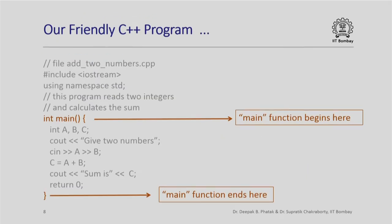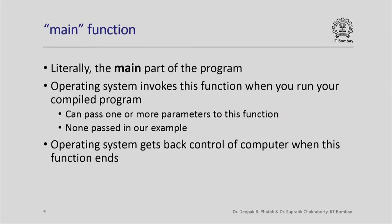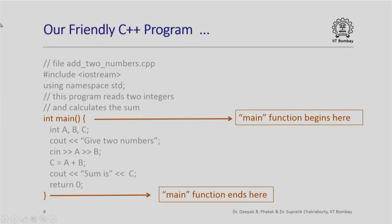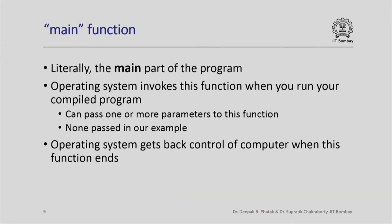Here is our program again. I have highlighted in red 'int main' with its open and close braces. This is the main function of the program — it begins at the open brace following 'int main' and ends at the matching closing brace. The main function is the main part of the program; the operating system invokes this function when the compiled program is run. You could pass parameters within the parentheses, though we have none here. We will see more about functions with parameters in a later lecture. When the main function ends, the operating system gets back control.